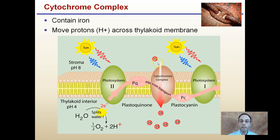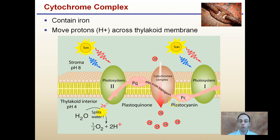The Cytochrome complex contains iron and moves protons — hydrogen ions — across the thylakoid membrane. This requires energy; it is active transport, taking hydrogen from low concentrations and moving it across this phospholipid bilayer, concentrating it inside. Again, remember the pH of the thylakoid interior is acidic at pH 4, and the stroma is pH 8, slightly basic. This occurs through a constant movement of those hydrogen ions, also called protons.